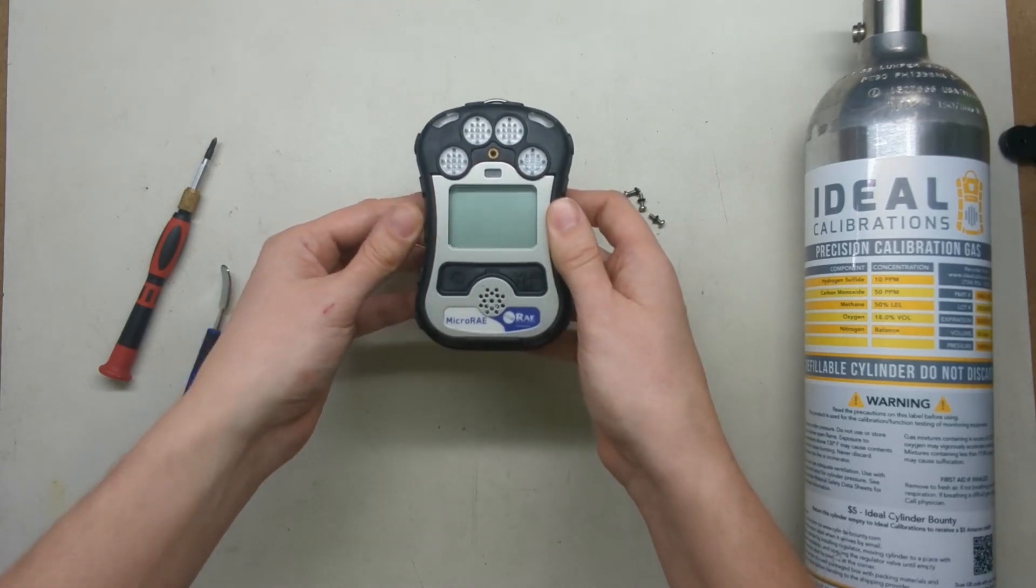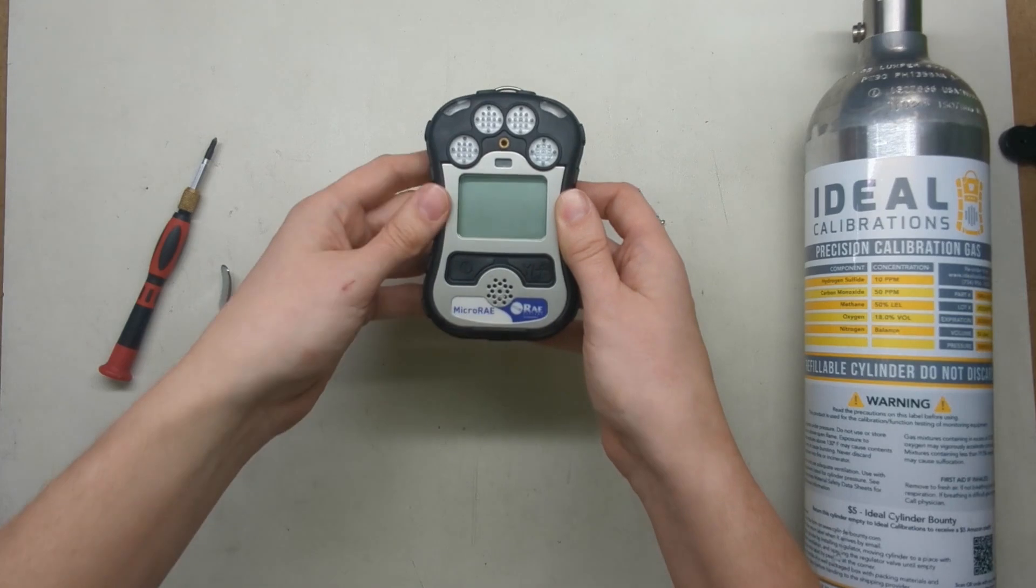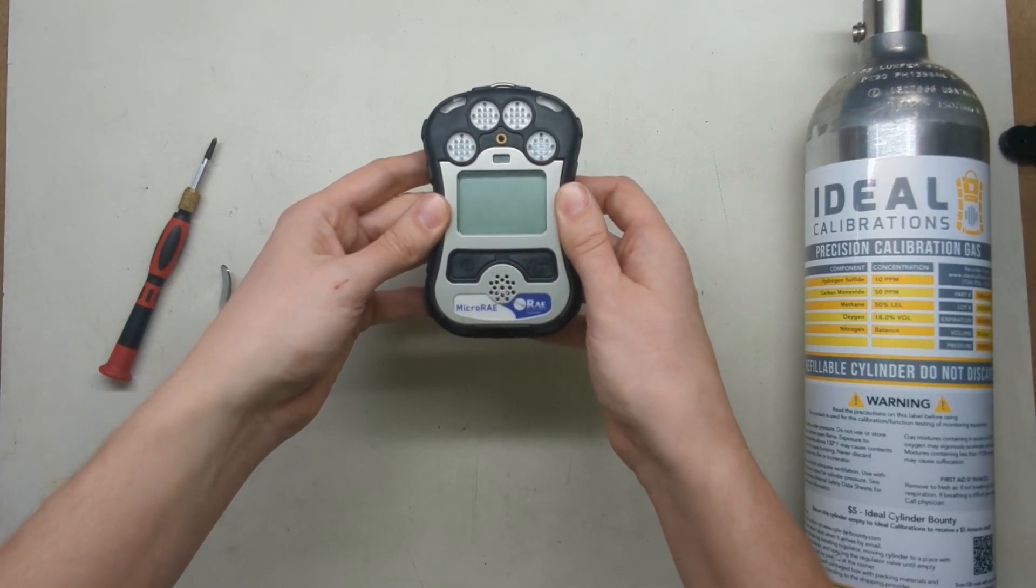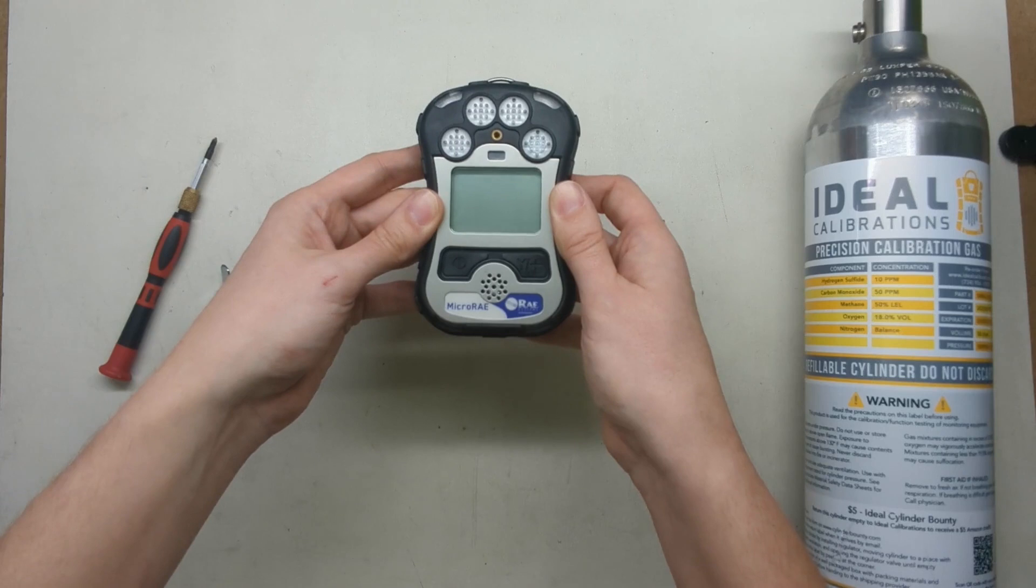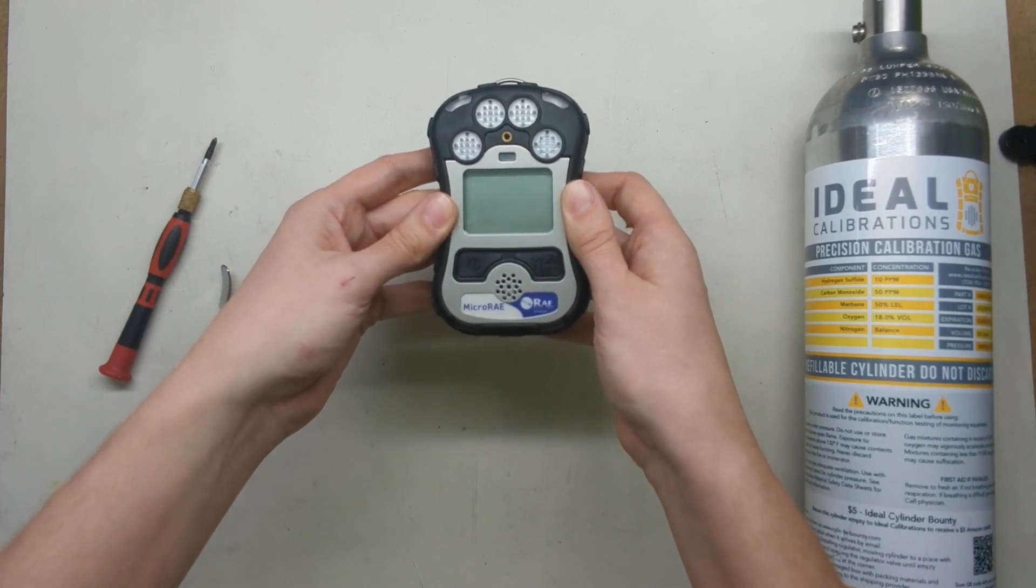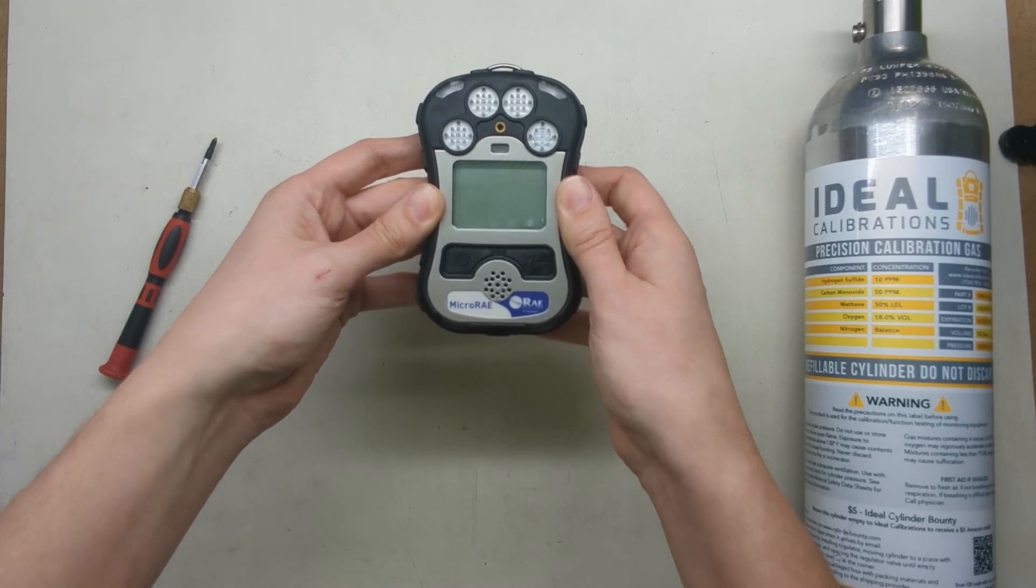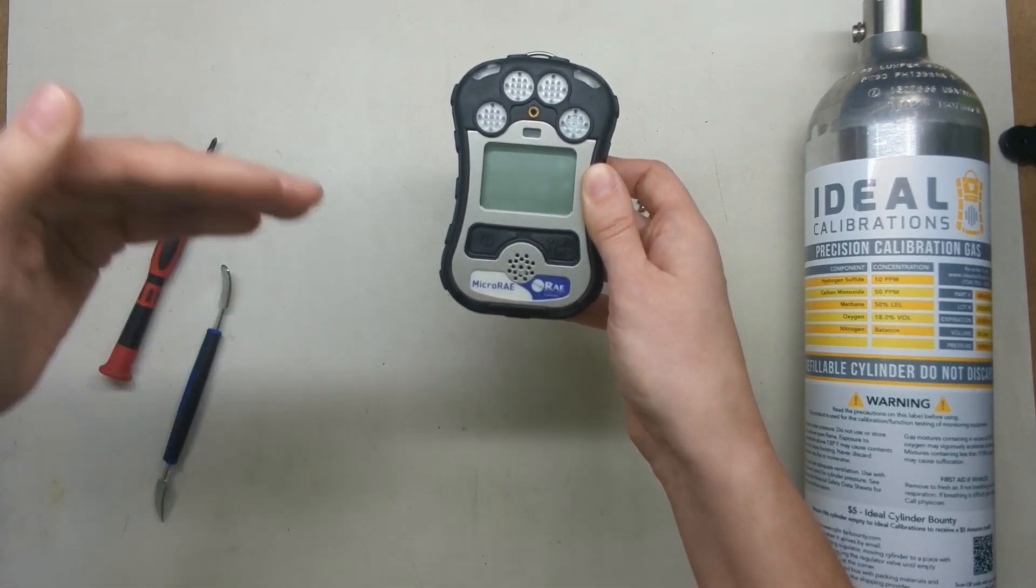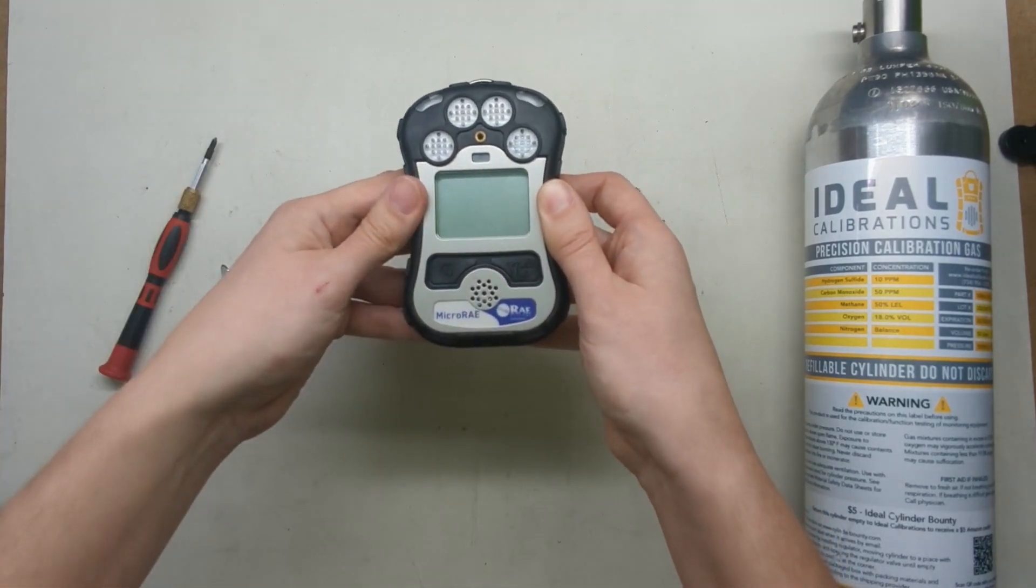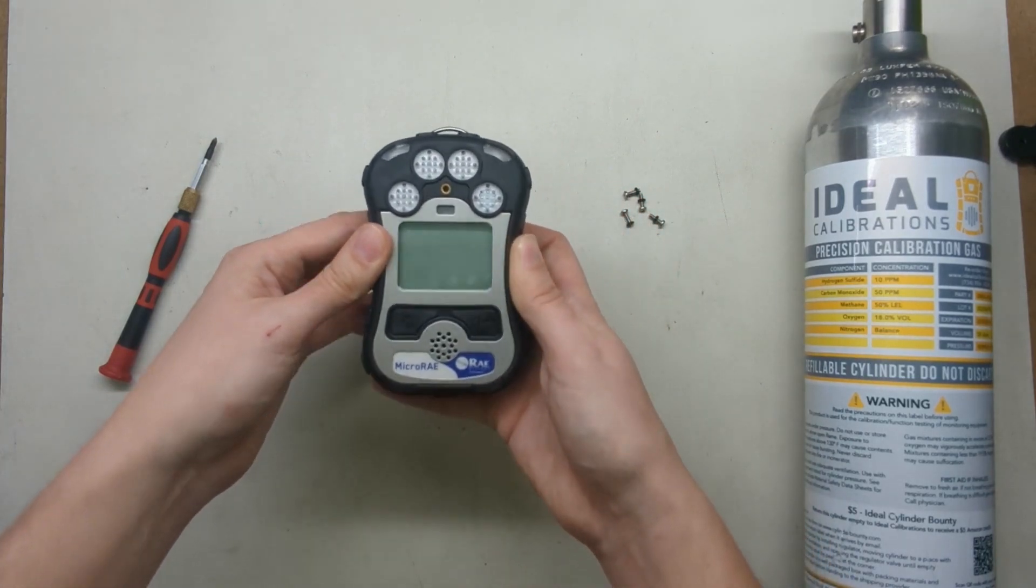You can tell an O2 sensor has failed if it's gone down to zero or if it's well below the value it'll calibrate at. Sometimes you'll see them showing around 12% or showing error on the sensor. Occasionally you'll see them shoot up high as well, and sometimes you'll just notice them bouncing around sporadically, so you'll want to watch out for any of those things. It's pretty easy to take apart.